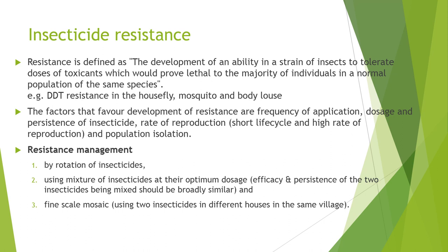There are various methods to manage resistance, for example: by rotation of insecticides, using a mixture of insecticides at their optimum dosage — ensuring the efficacy and persistence of the two insecticides being mixed should be broadly similar — and fine-scale mosaic, where you can use two insecticides in different houses in the same village.